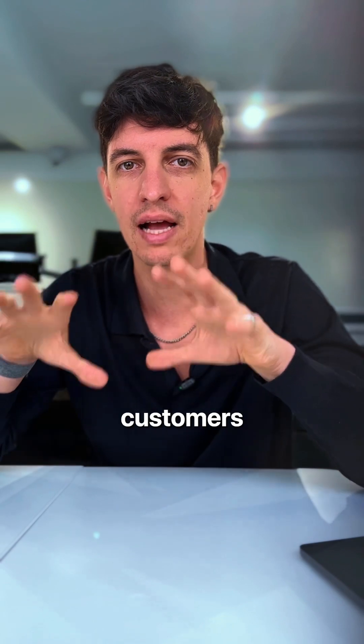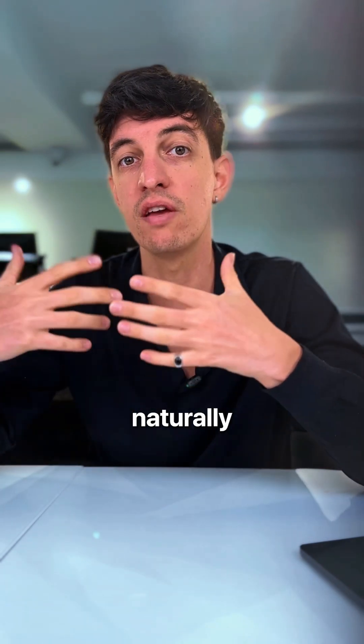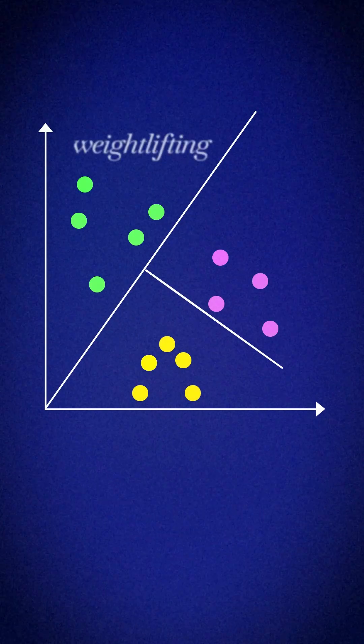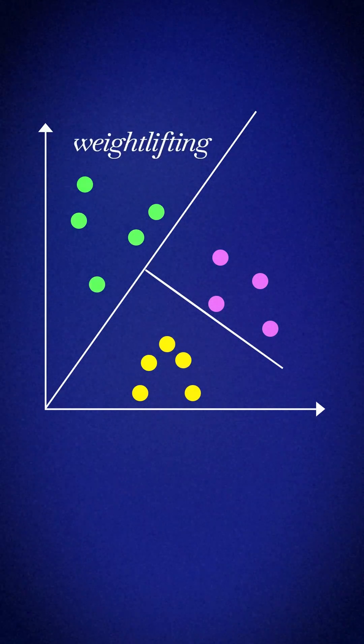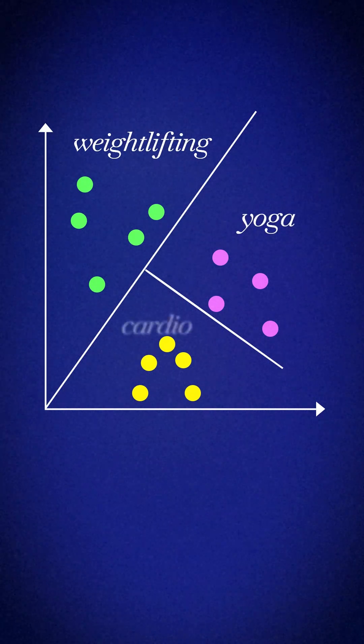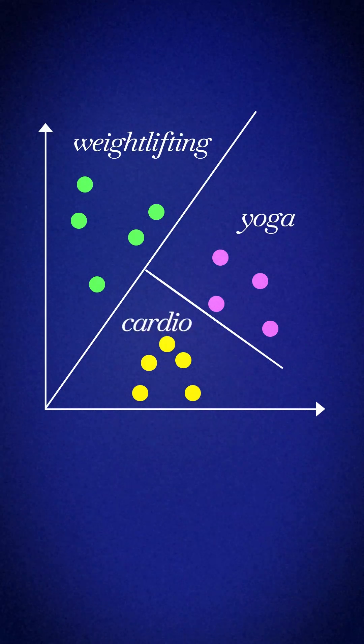Eventually, the gym customers naturally form three distinct groups. Maybe one group loves weightlifting, another prefers yoga, and the last one mostly does cardio.